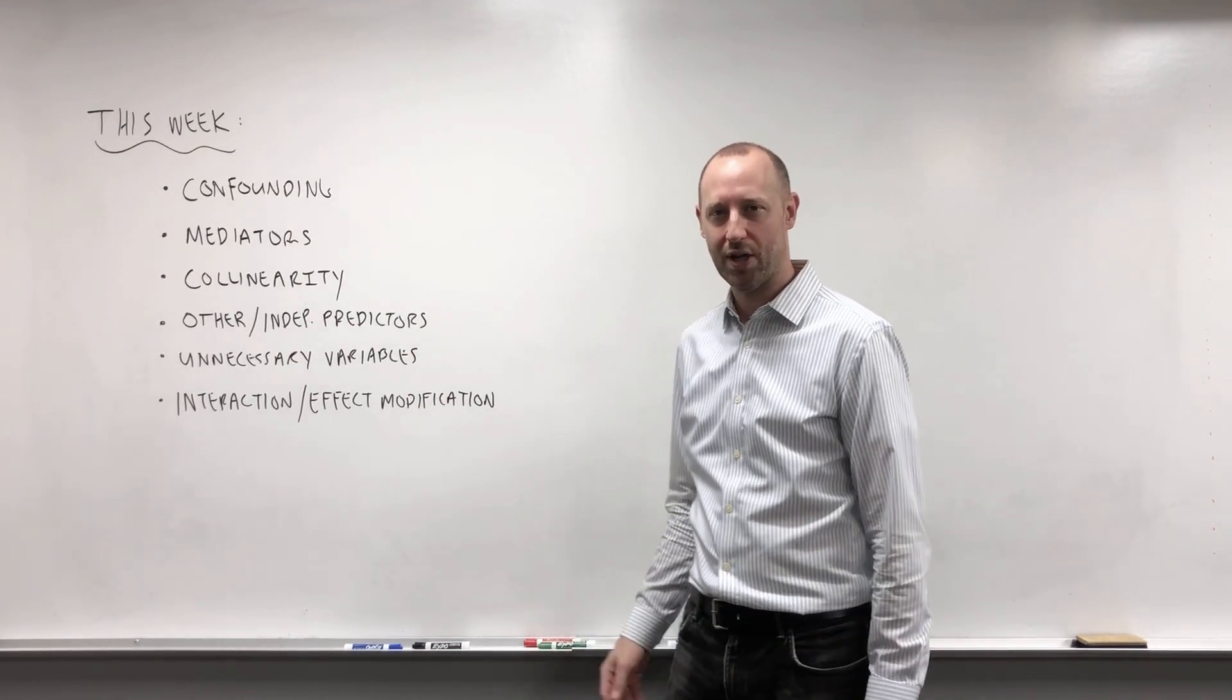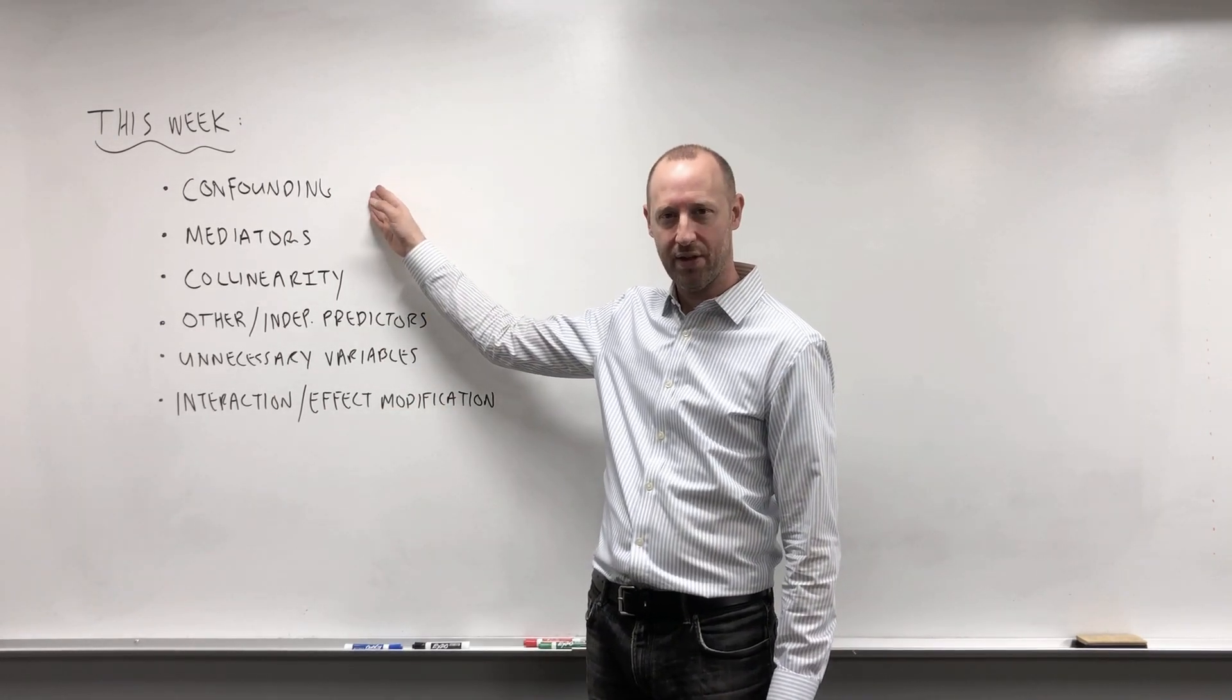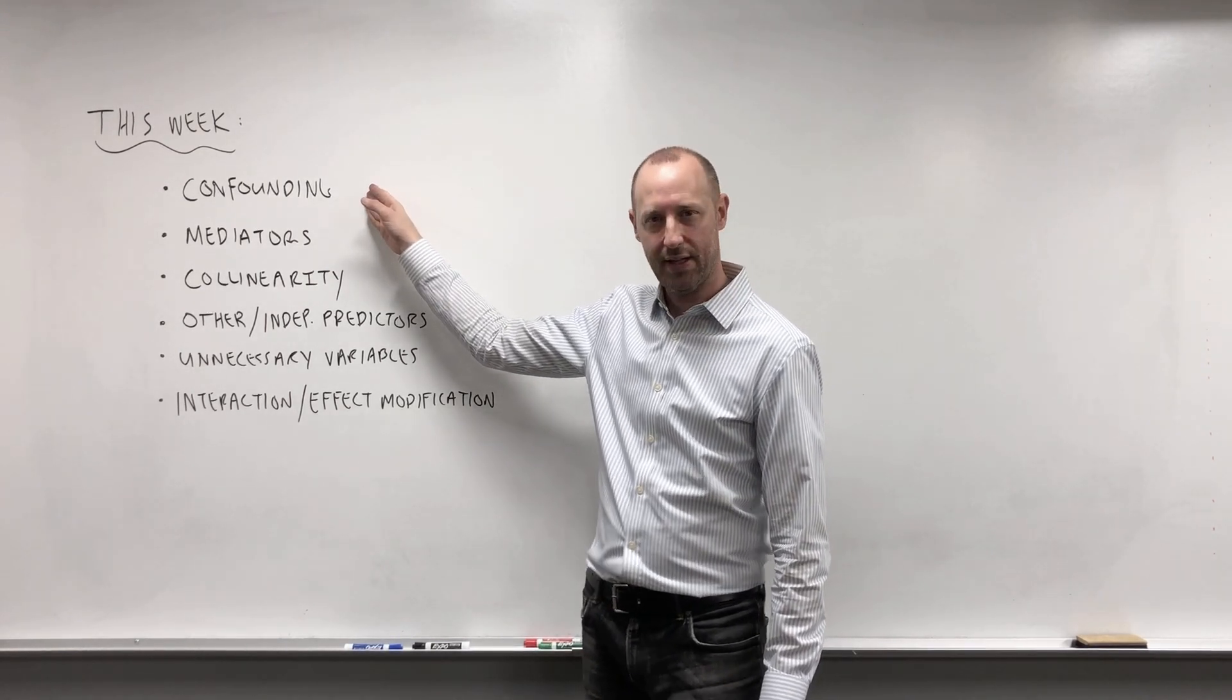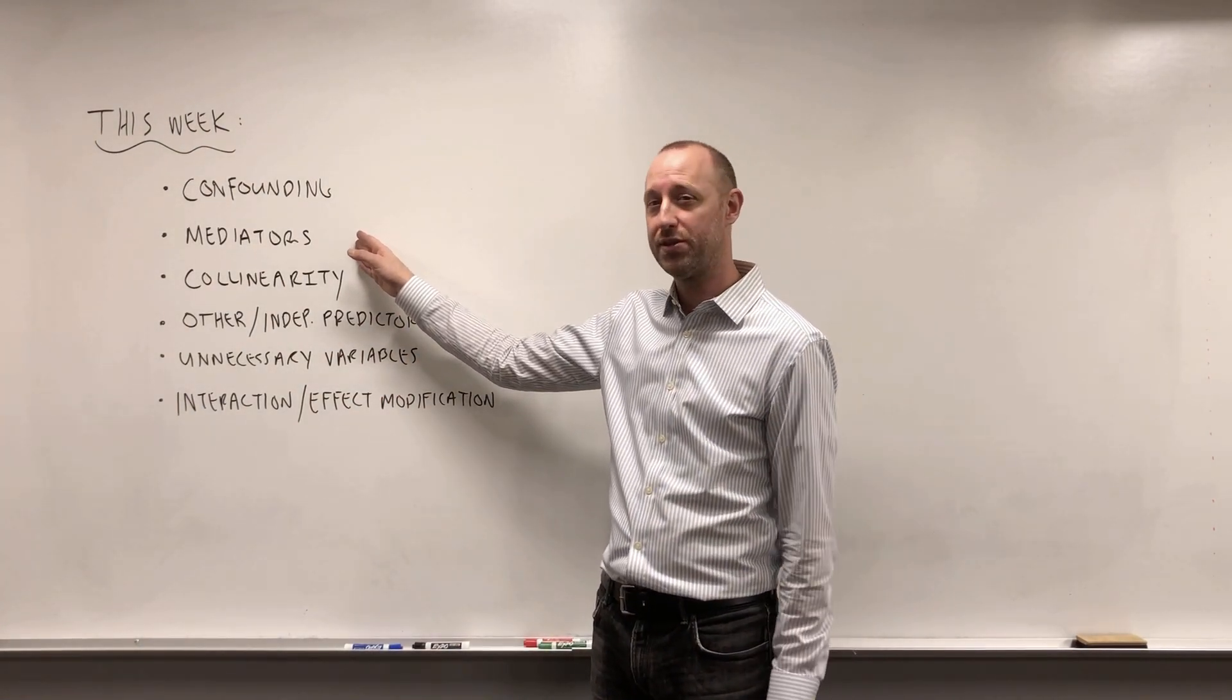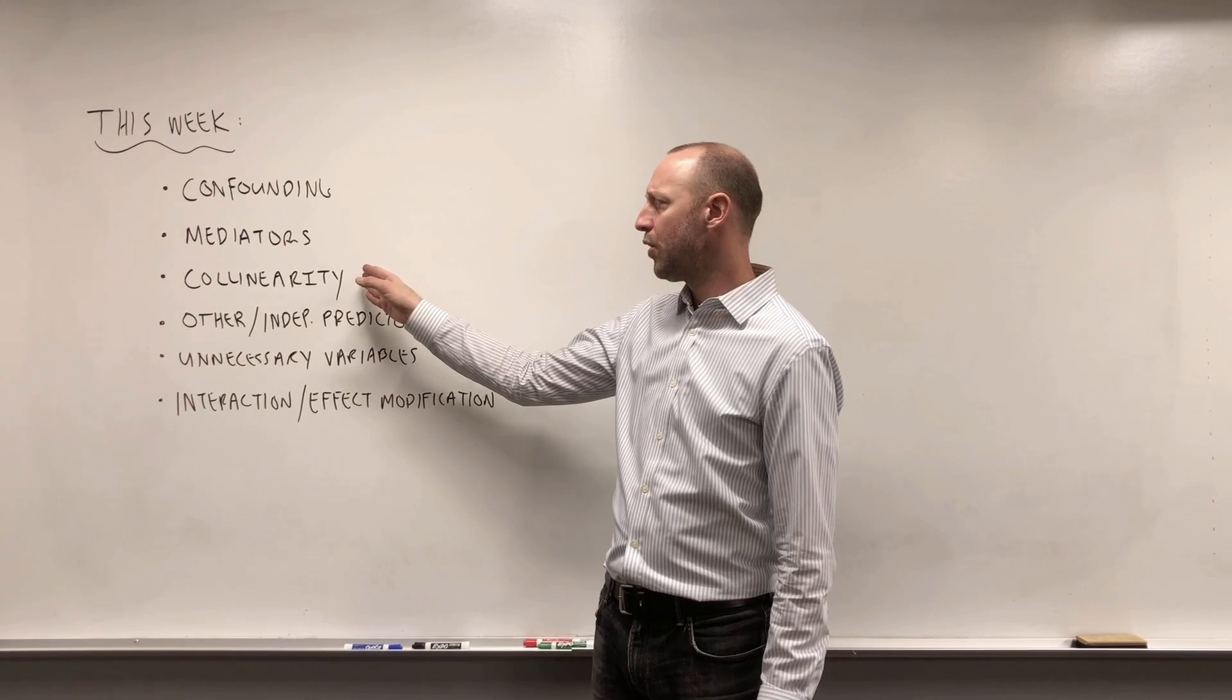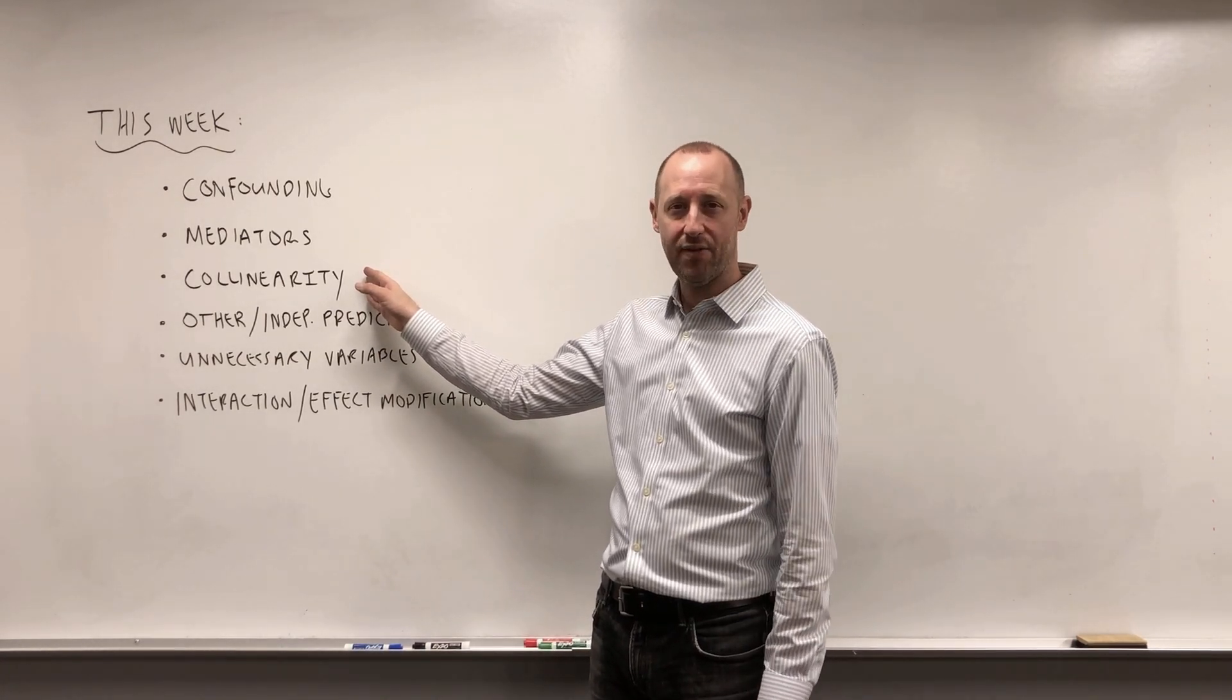This week we're going to more formally talk about all those ideas. We're going to talk about what is confounding, what does it look like and how can we identify it both conceptually and numerically in data sets. We're going to talk about the idea of mediators, both conceptually how can we identify them and numerically what will they look like in a data set. Collinearity: what is it conceptually, how can we identify it numerically in a data set.